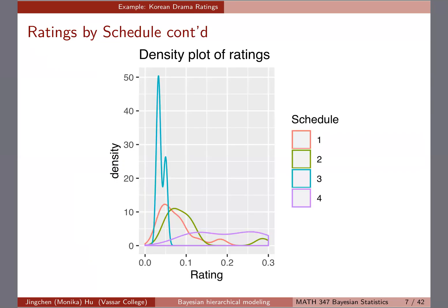I'm plotting the rating as density plots for schedules one, two, three, four. The ratings range from zero to 0.3. You can already see drastically different features or trends of the density plots themselves.